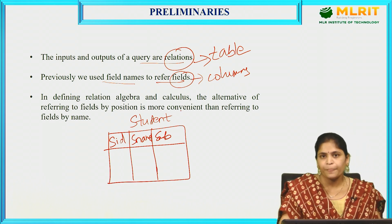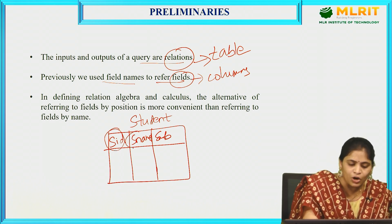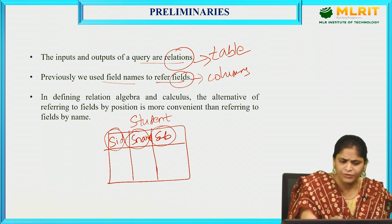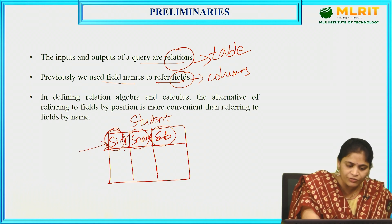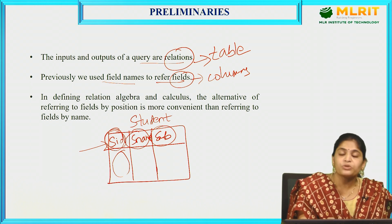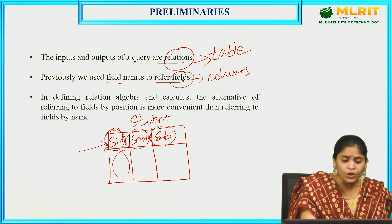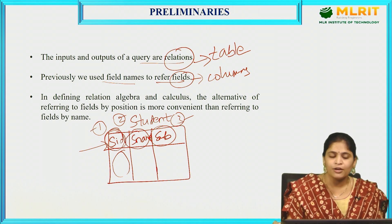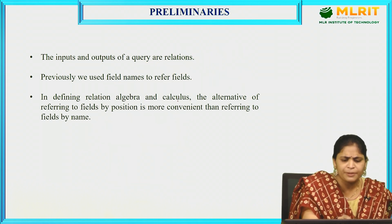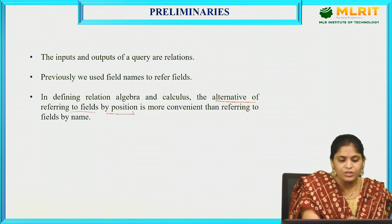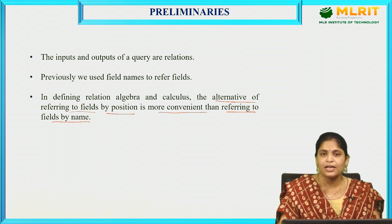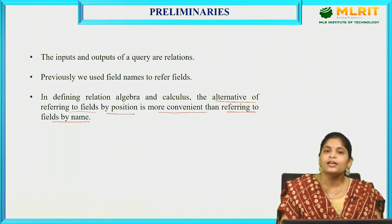Let us name the table as student table. These columns are also called fields or domains. Previously, we used field names to refer to them in order to retrieve a particular type of data. But here, by using relational algebra, we can use positions — number 1, number 2, and number 3 — to refer to these fields. In defining relational algebra, referring to fields by position is more convenient than referring to them by name.